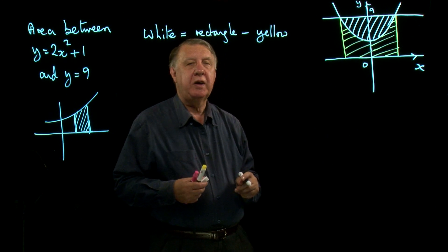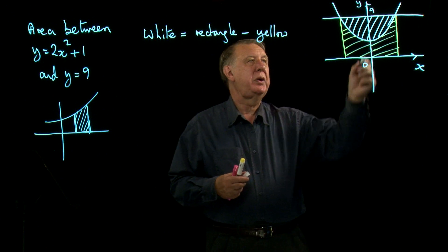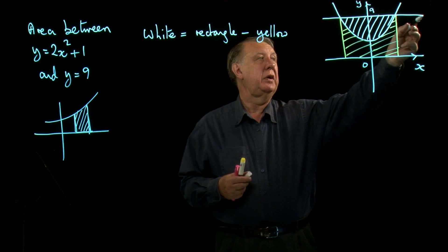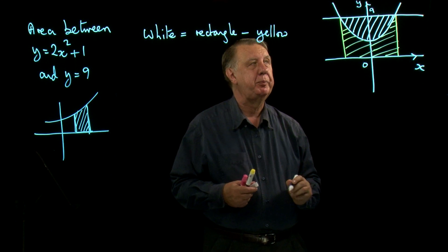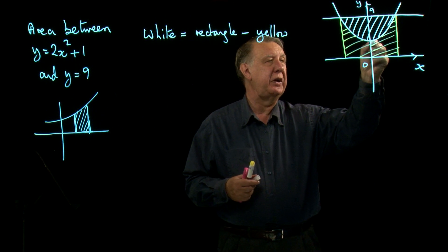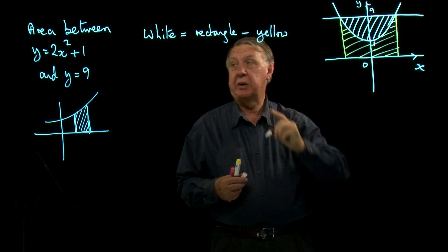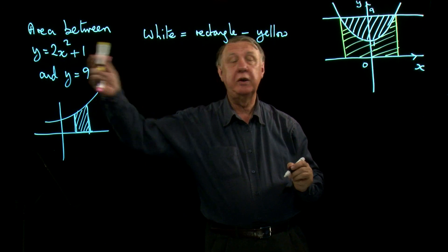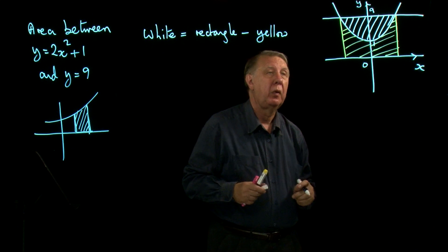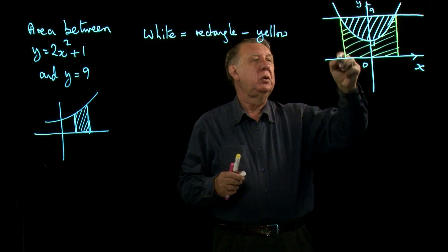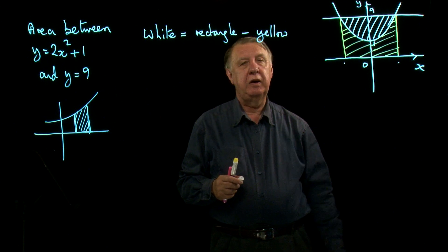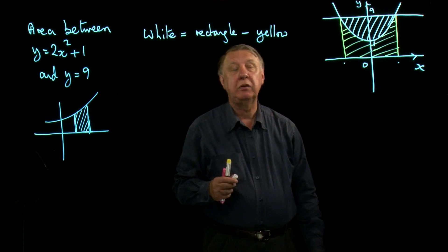What do we know about the rectangle? Well, we know that the height is 9 because that's 9 there. By the way, this point here is 1 because when x is 0, y is 1. So let's put that in. But do we know what these points are here? At first sight we don't.